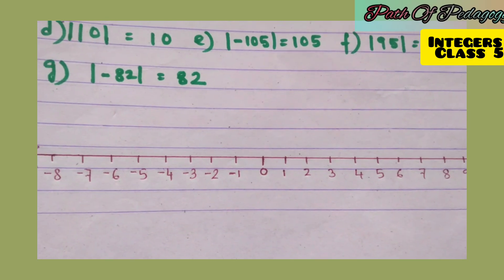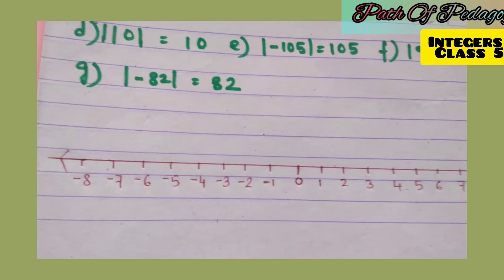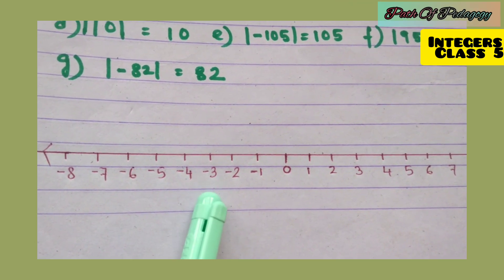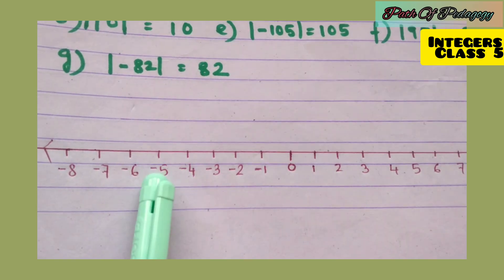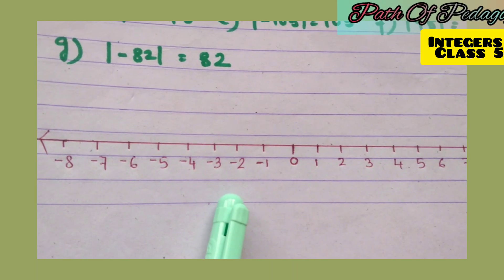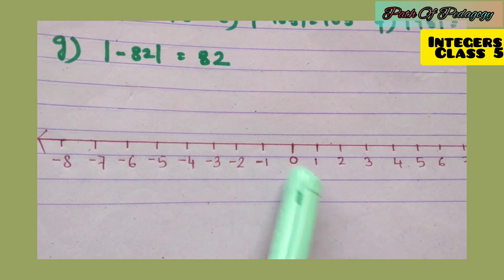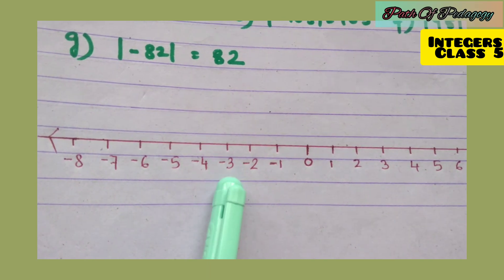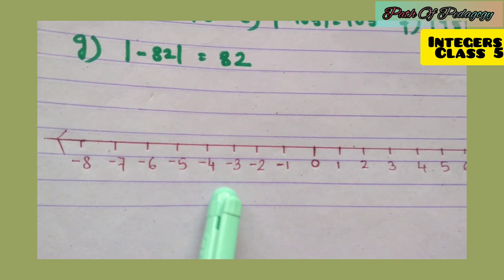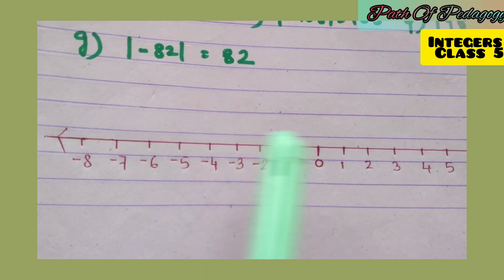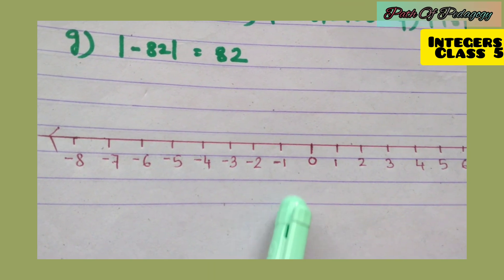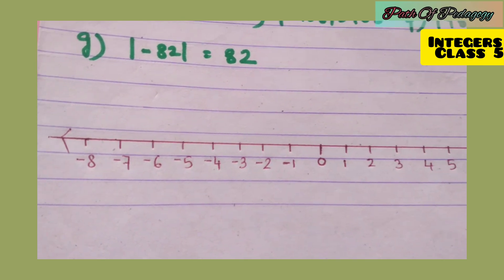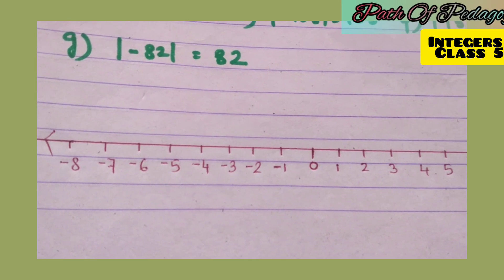Another example: find the absolute value of −3. Minus 3 is a negative integer on the left-hand side of 0. The distance from 0 to −3 is: 0 to −1 is 1 unit, −1 to −2 is 2 units, −2 to −3 is 3 units. So the absolute value of −3 is 3 — always positive, regardless of the integer's position.